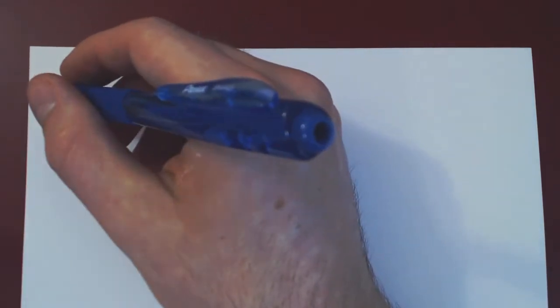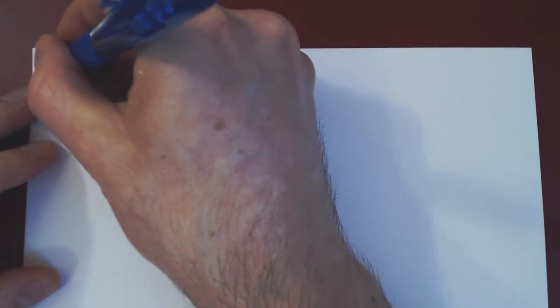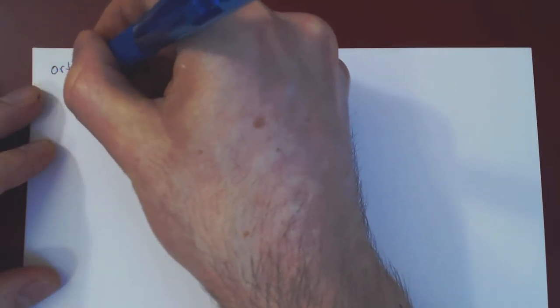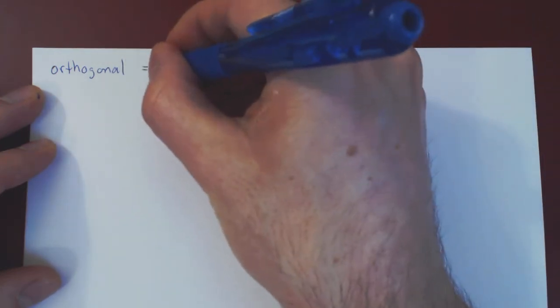And sometimes you will hear the word orthogonal instead of perpendicular. They are synonyms of each other. So orthogonal is a synonym of perpendicular.